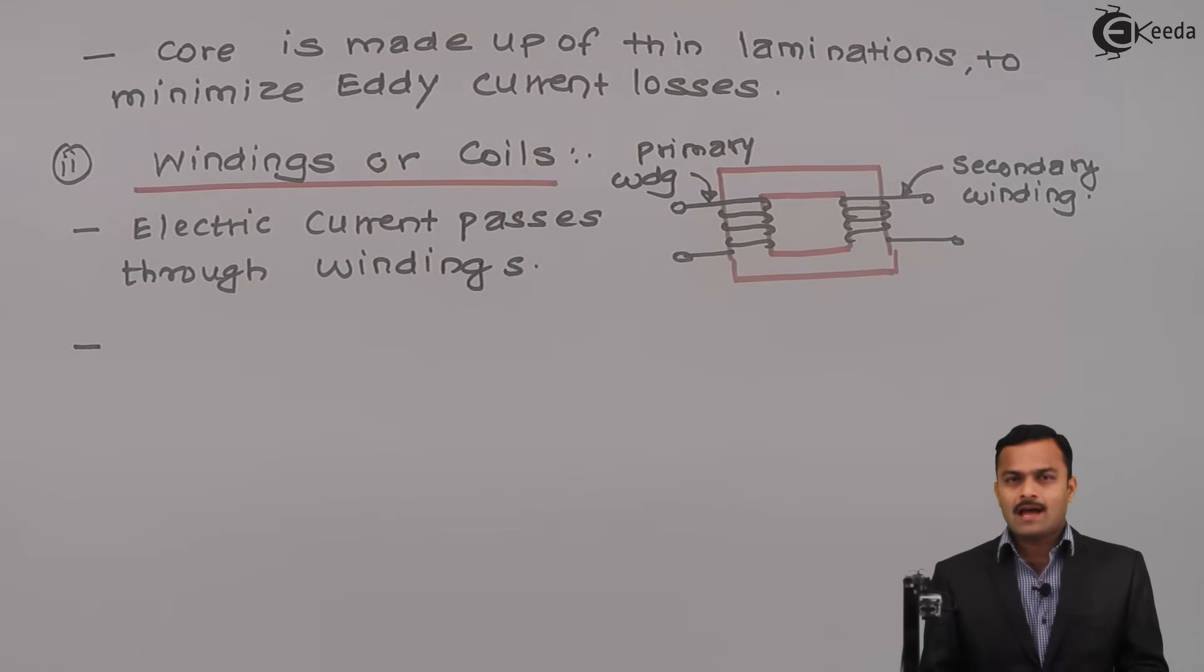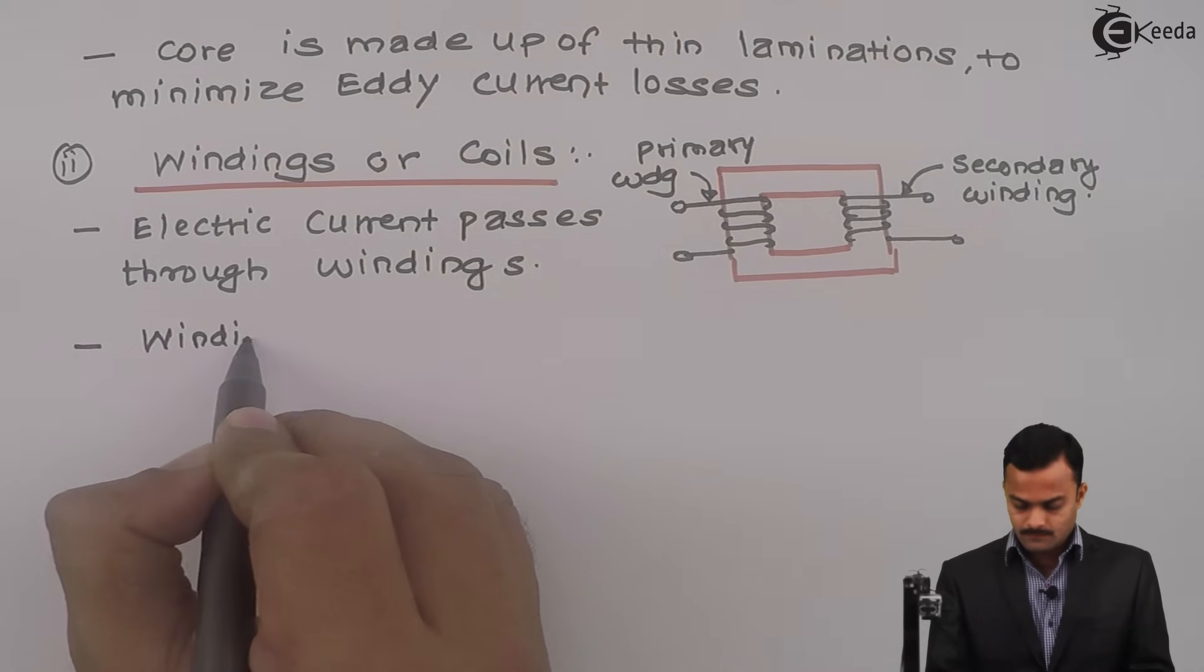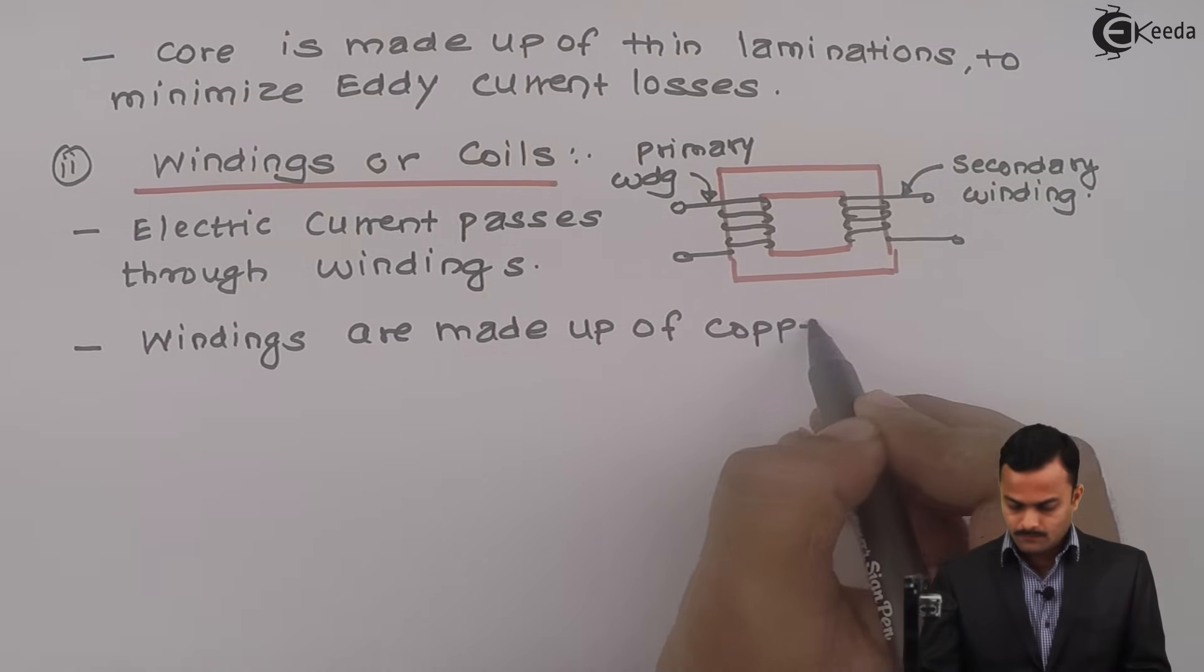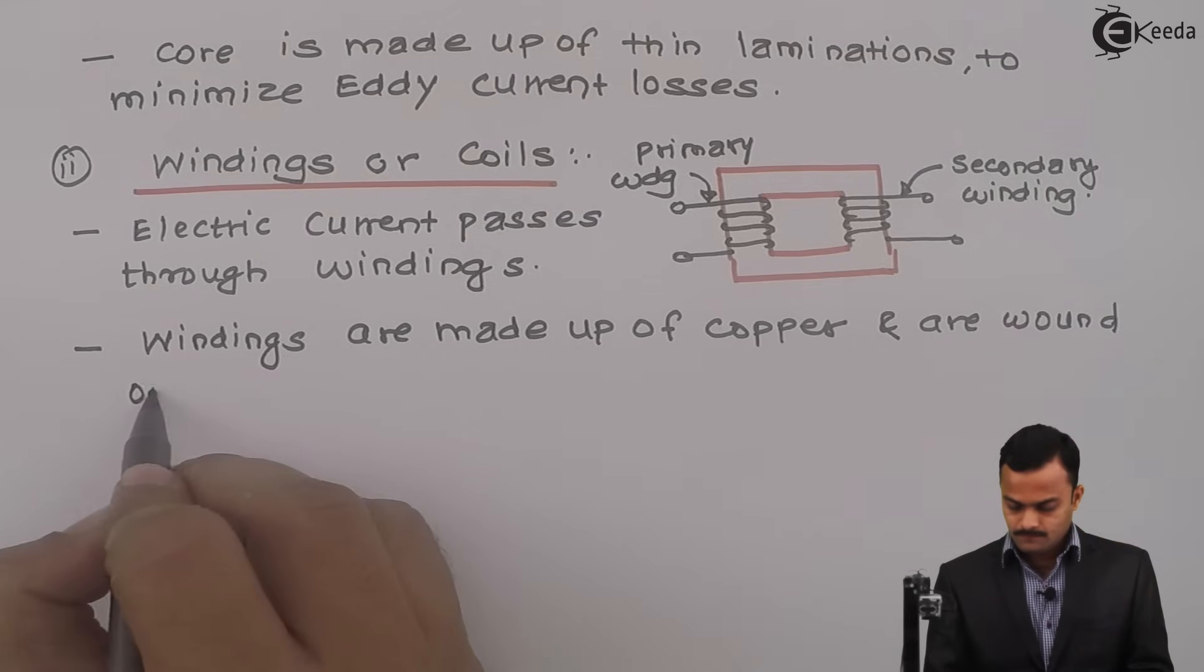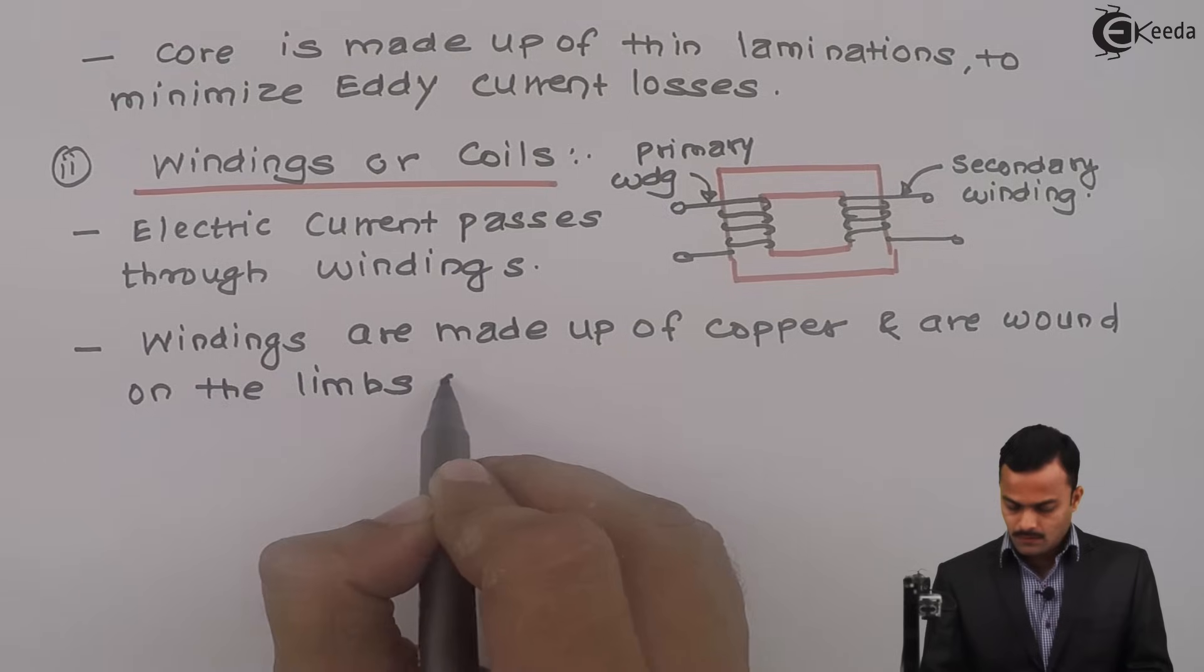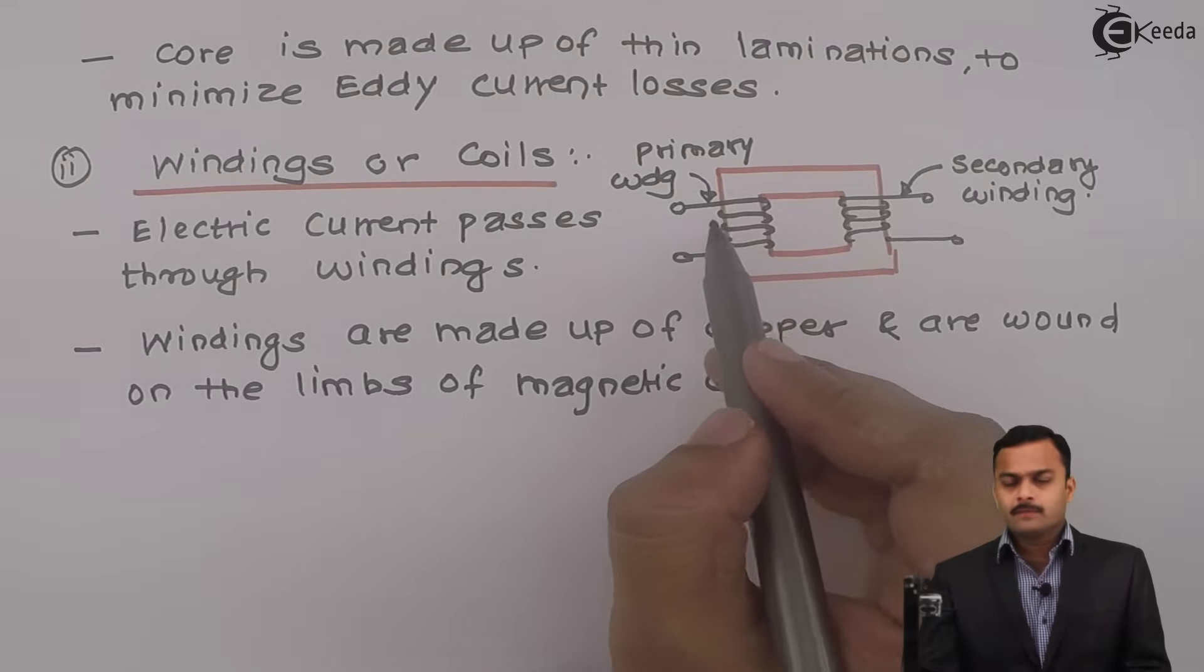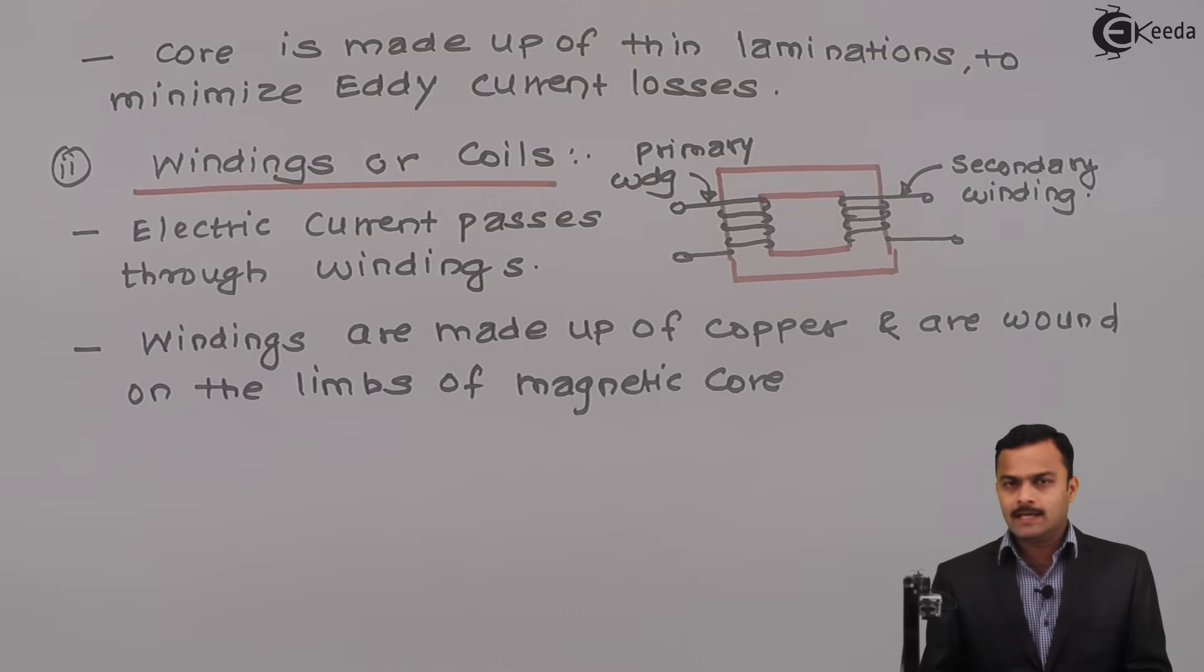So we need a material which will have less resistivity so we will use copper for carrying the current. Windings are made up of copper and are wound on the limbs of magnetic core. So there will be many number of turns on this limb so obviously there is a risk of touching two subsequent turns but that we are going to avoid with the help of insulation. So remember these windings are insulated from each other.